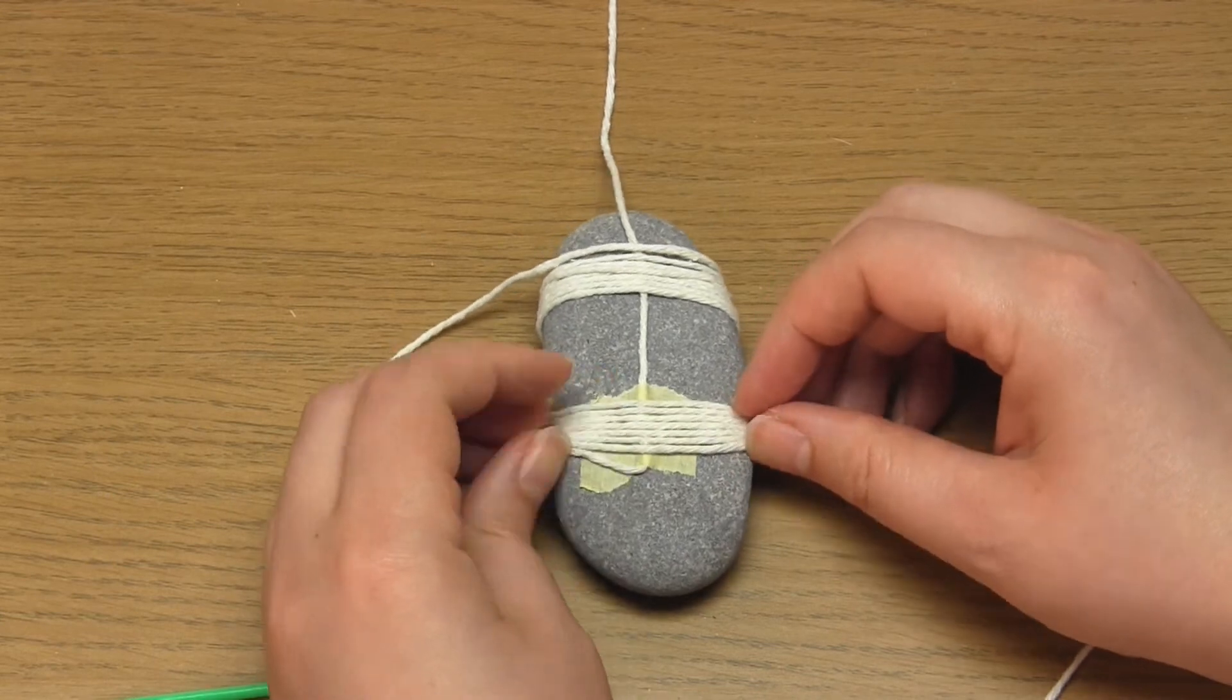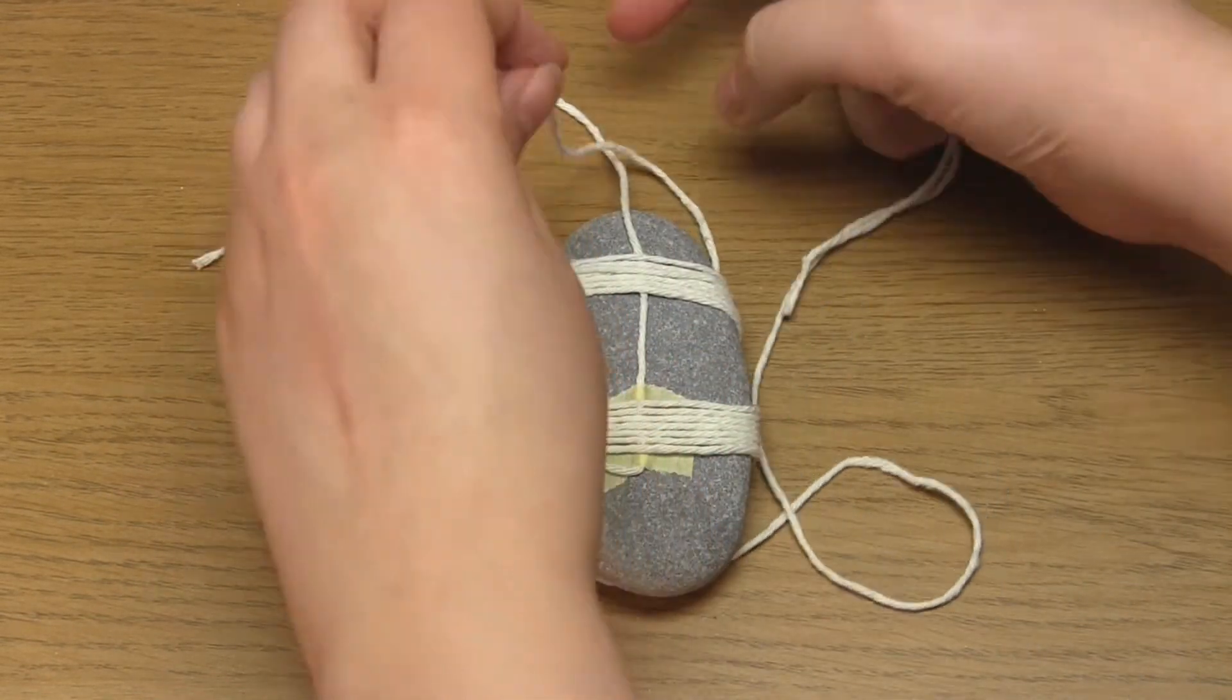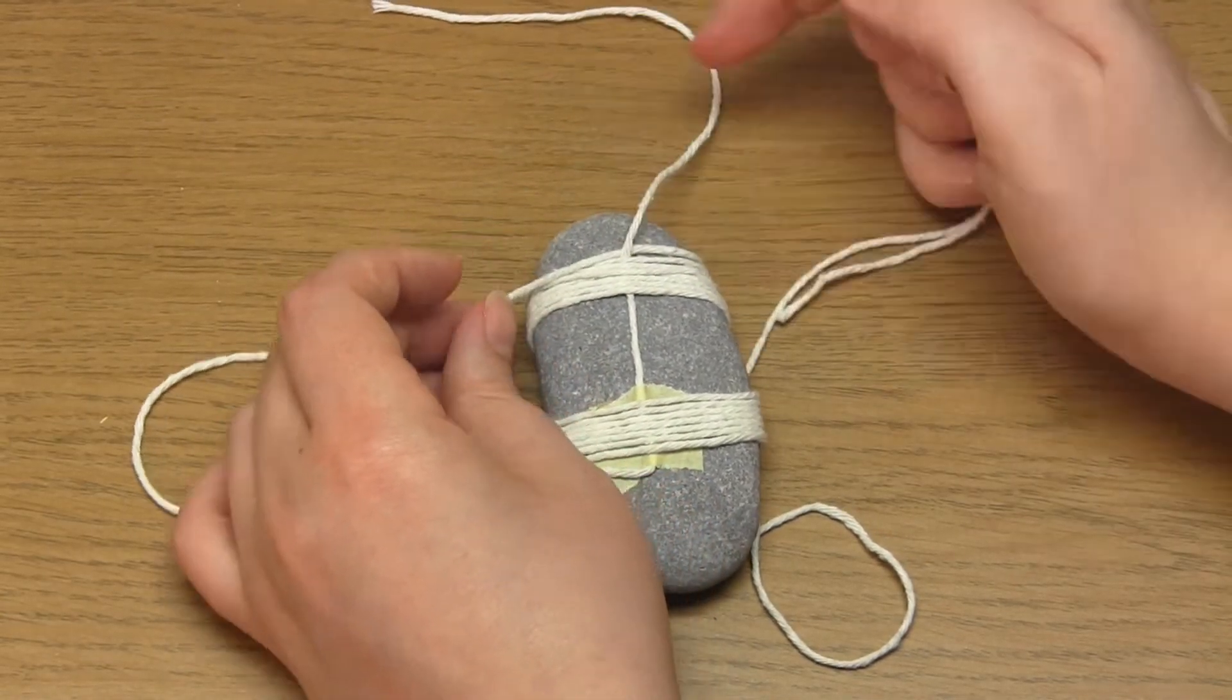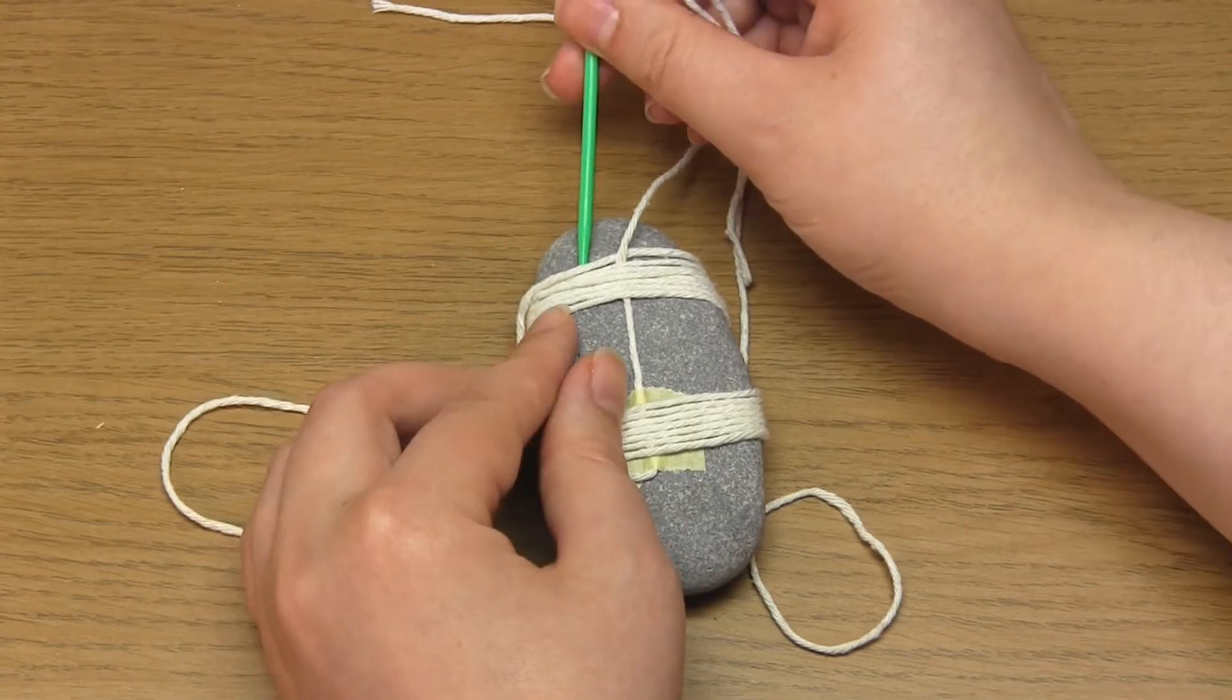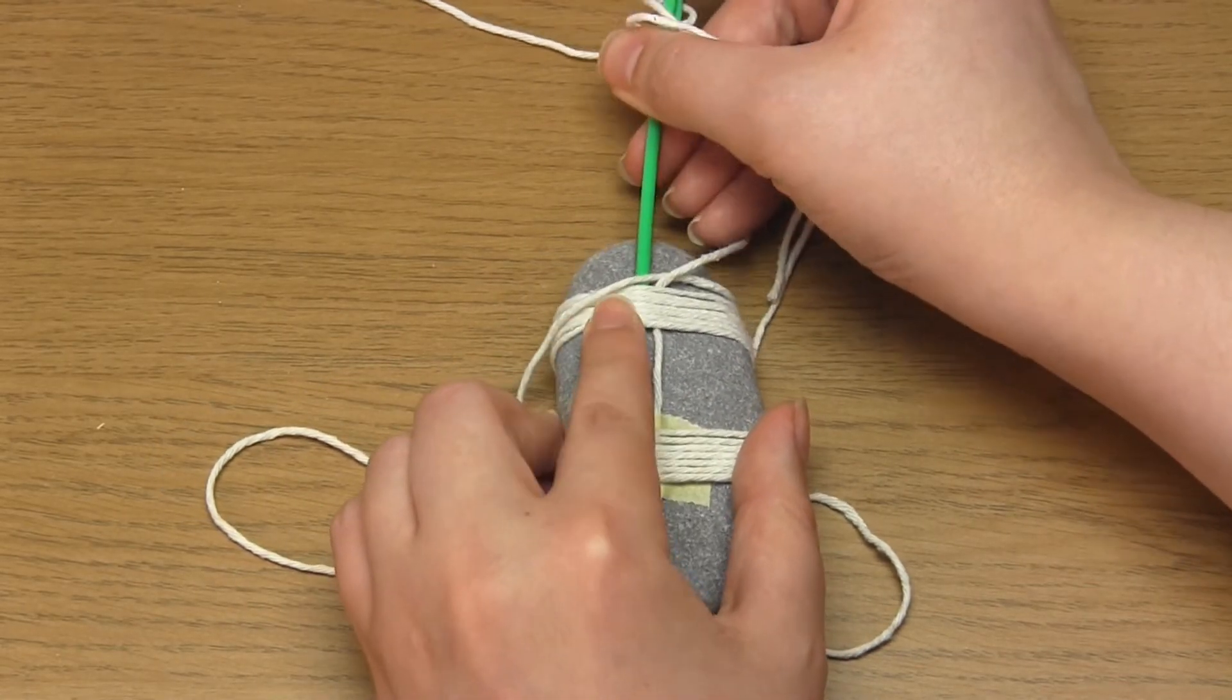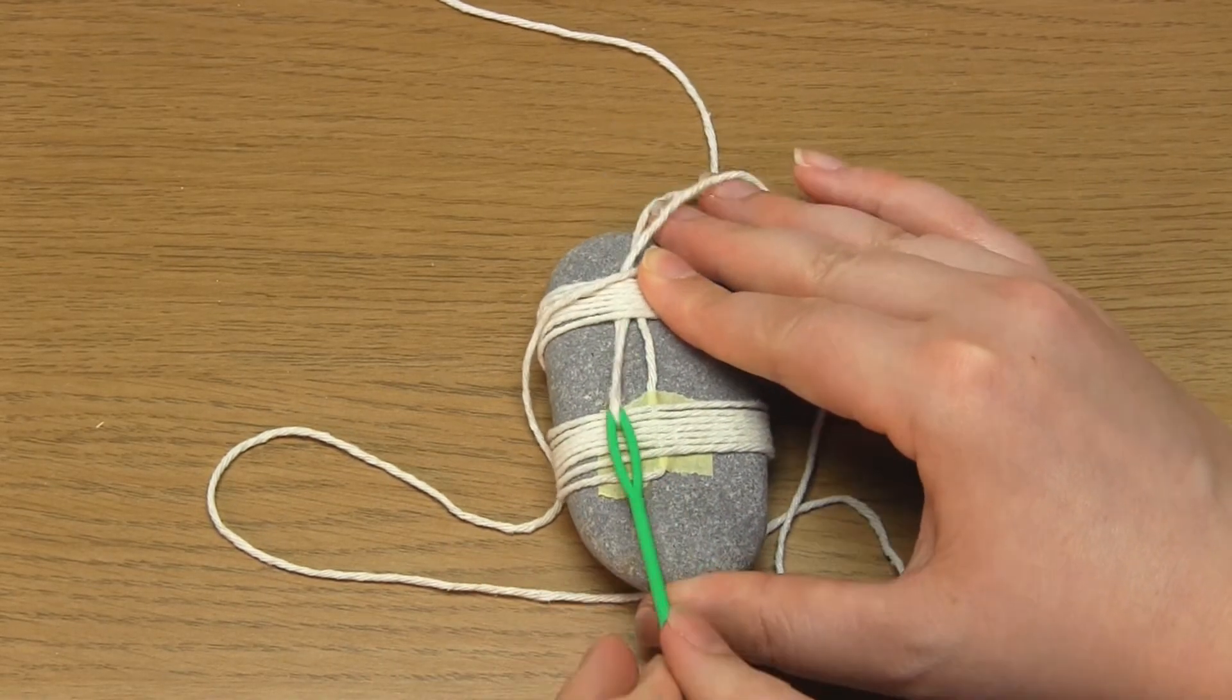Take this long yarn tail behind the short yarn tail that's leaving the top of the pebble. Then feed it under all of the yarn strands in the upper band. And under all of the yarn strands in the lower band, including the lowest strand on the left.